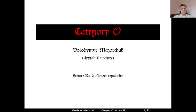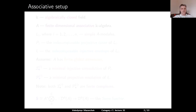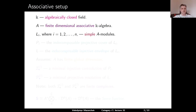Category O, Lecture 32: Auslander Regularity. Let us start with describing the associative setup for the definition of Auslander regular algebras. Let K be an algebraically closed field and A a finite dimensional and associative K-algebra. Let L1, L2, and so on L_n be a complete and irredundant list of representatives of isomorphism classes of simple A-modules.